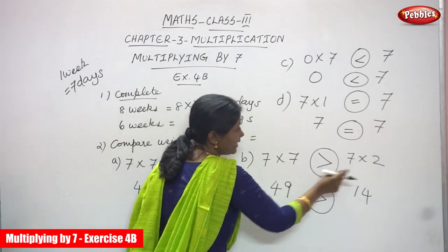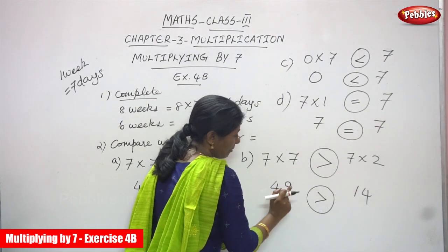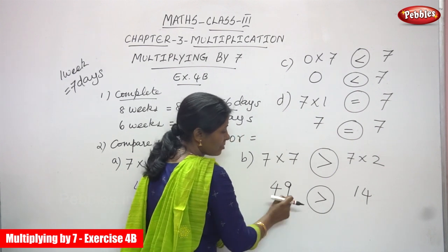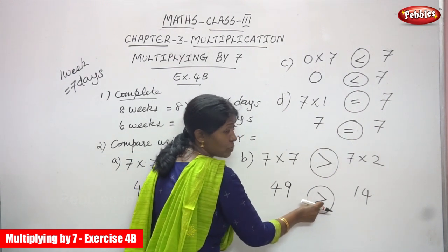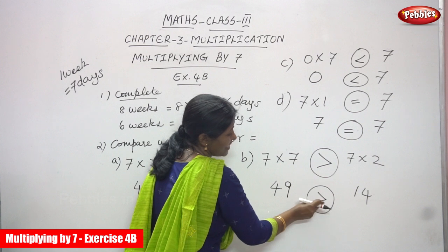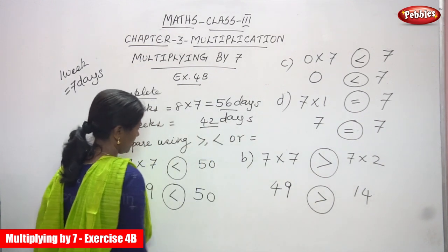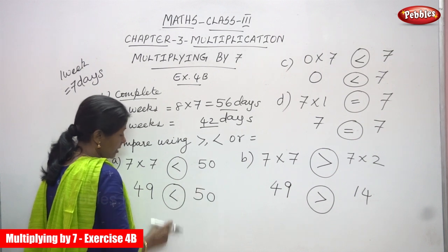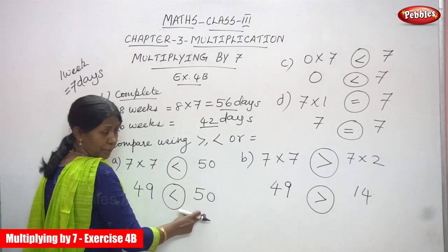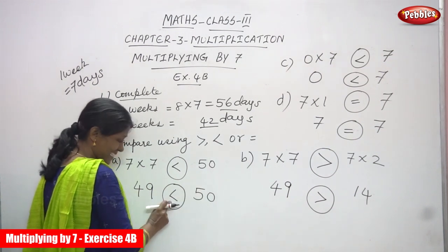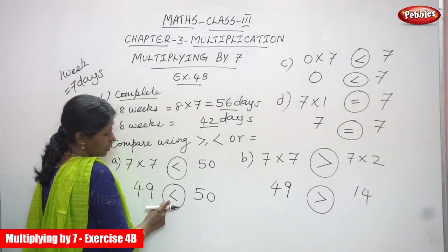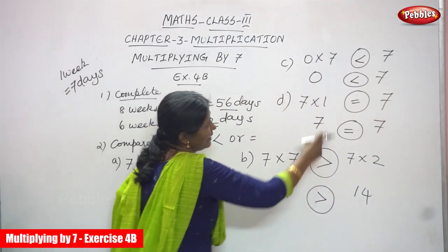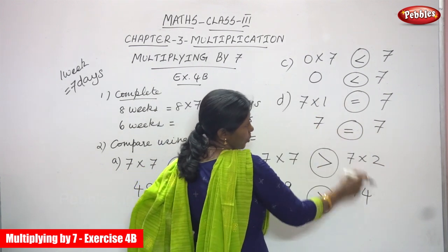So 7 sevens are 49 and 7 twos are 40. Comparing 49 to 40 — 49 is greater, so I use a broader mouth, which is the greater sign. And 7 sevens are 49 compared with 50 — 49 is less than 50, so I use the narrow mouth, which is the less-than sign. This is less than, this is greater than, this is less than, and this is equal.